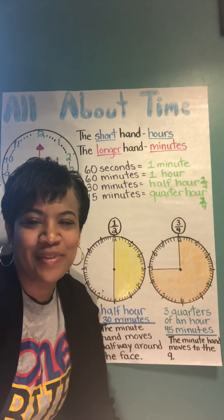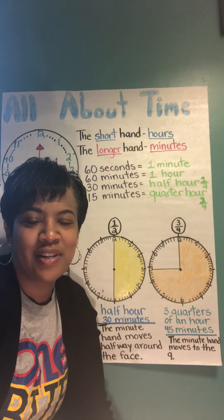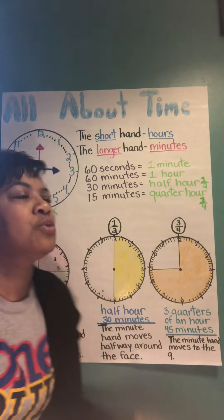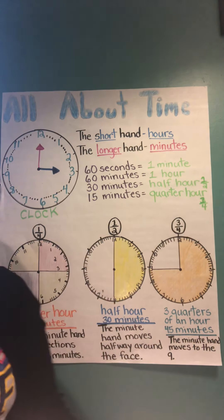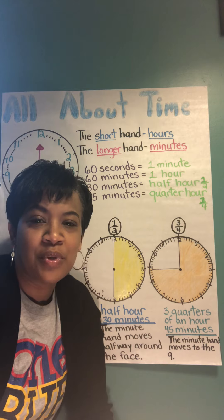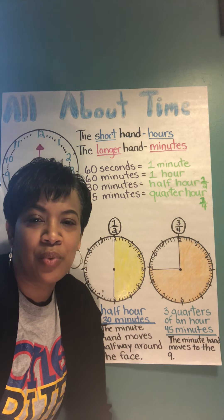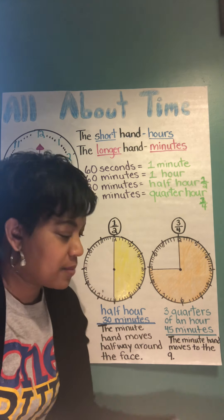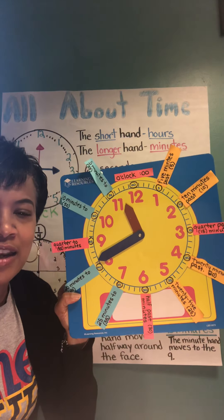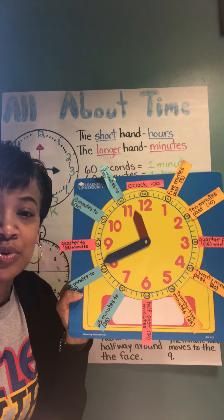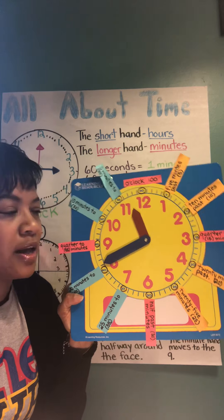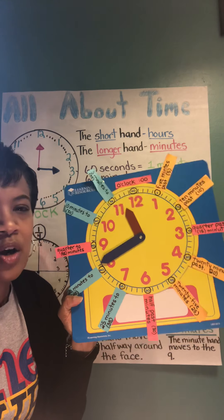Hi boys and girls, it's Ms. Harleen. Today is Monday, May 4th, 2020. I had sent you this poster on the Remind app on Friday and I said I would be going over it today, so I'm going to go over it with you right now. And then after that I'm going to go over this little handy-dandy clock that I was waiting for — I ordered it on Amazon — so I'll go over that too.